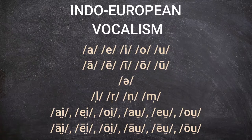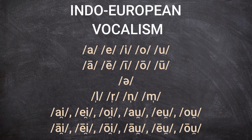Let's recap. We have five vowels in their short version — A, E, I, O, U — and in their long version — Ā, Ē, Ī, Ō, Ū. Then we have a number of laryngeal sounds that we refer to as schwa, which are always short. We have four consonants that can behave as vowels: L, R, N, M. And finally, the twelve diphthongs. Now let's see what happens to these sounds in Germanic.